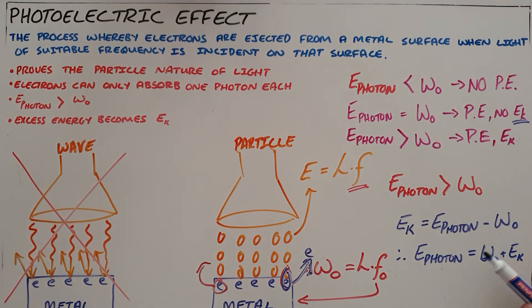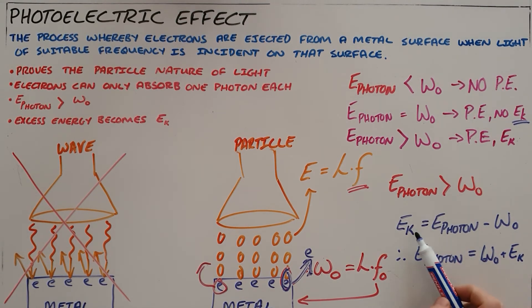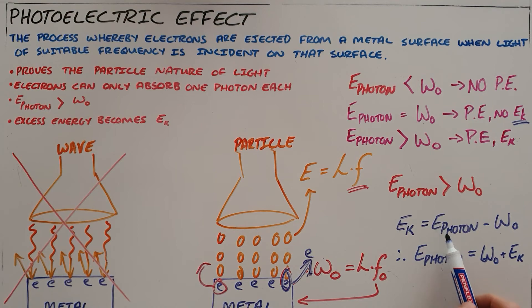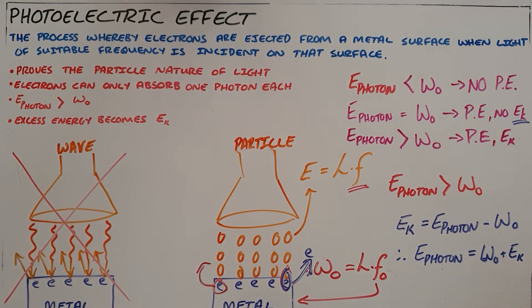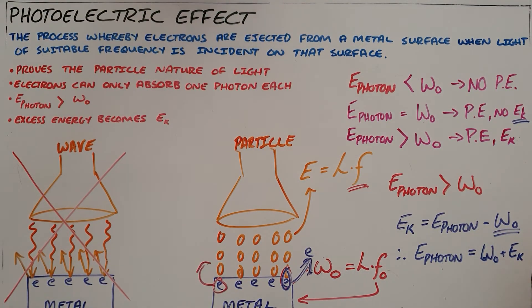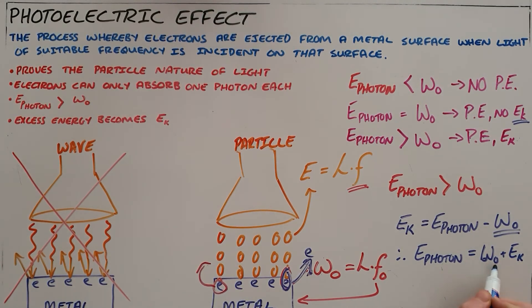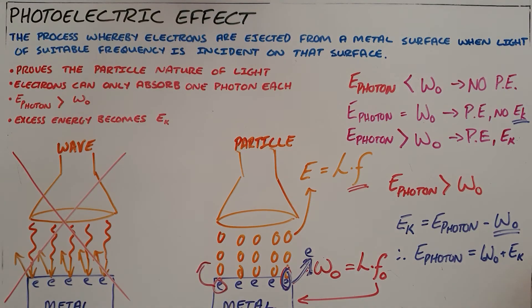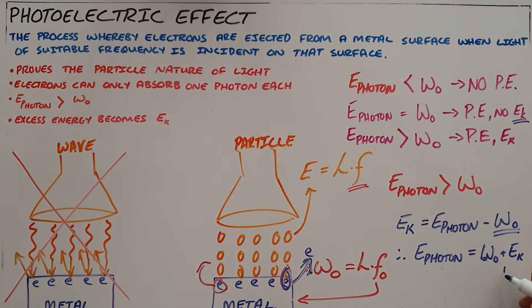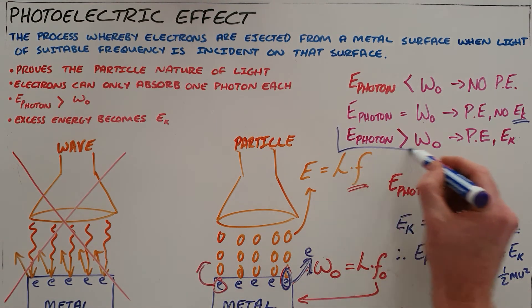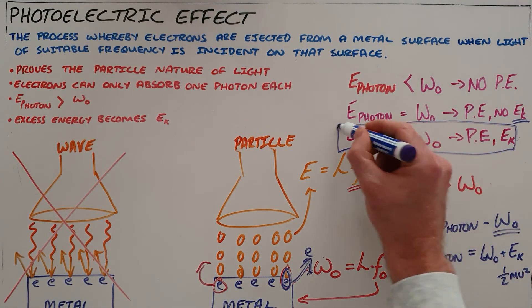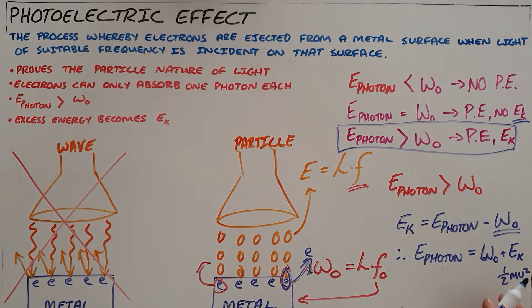And from this we can find the formula: the kinetic energy is equal to the energy of the photon minus the work function, or we can rewrite that as the photon energy is equal to the sum of the work function and the kinetic energy, where we remember kinetic energy is half mass times the velocity squared. Note that this only applies when the energy of the photon exceeds the work function.